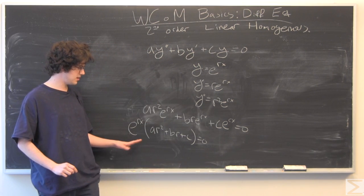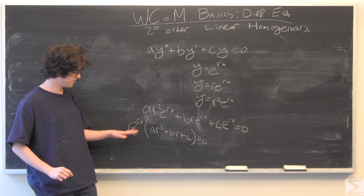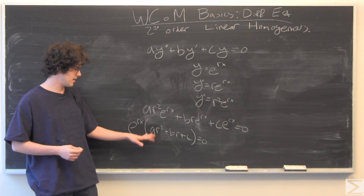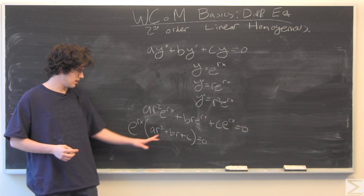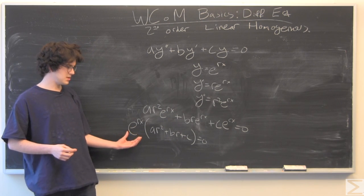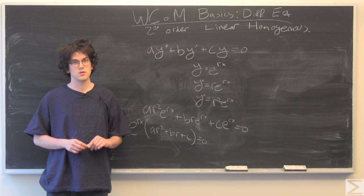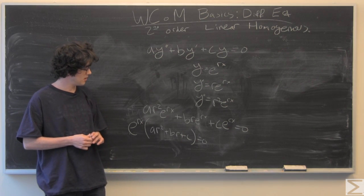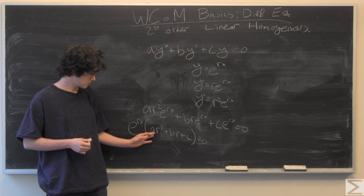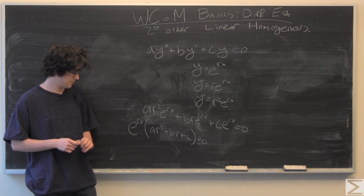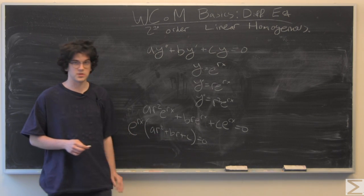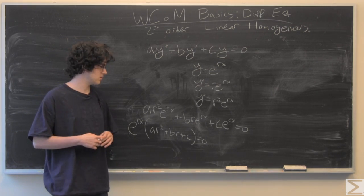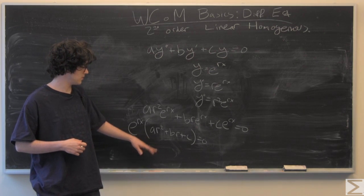I've plugged in and then here I've factored out e to the Rx, the common term. We have this quadratic, which if you notice, e to the Rx never equals zero, no matter how small x or R is. That means this has to equal zero. So that gives us what we call a characteristic equation for solving for R.